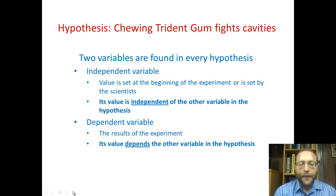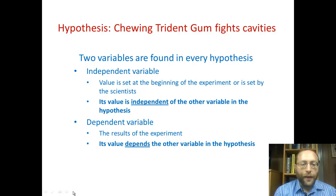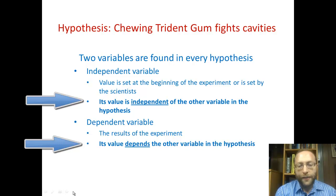The second one is called the dependent variable, and these are your results. Its value depends on the variable in the hypothesis. What I have up here on the screen — and you should also put in your notes — the reason why I bolded the last two bullets is because you use those in order to identify which is which in the hypothesis, because you always find this in the hypothesis.